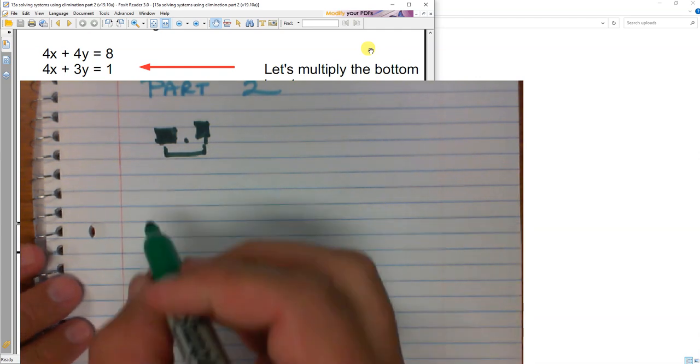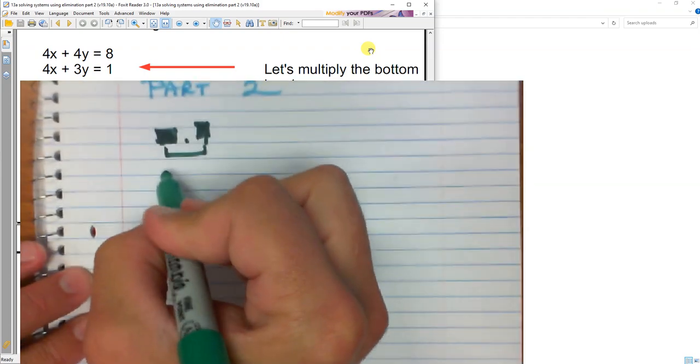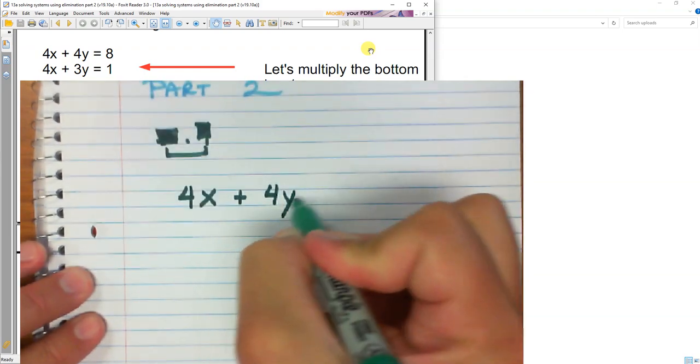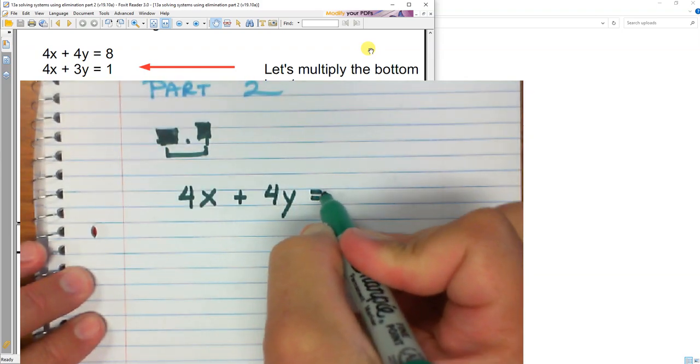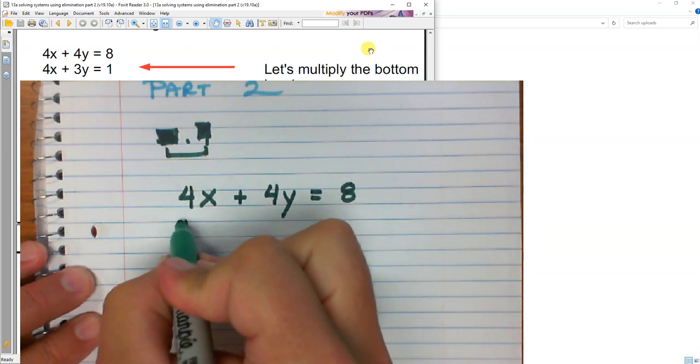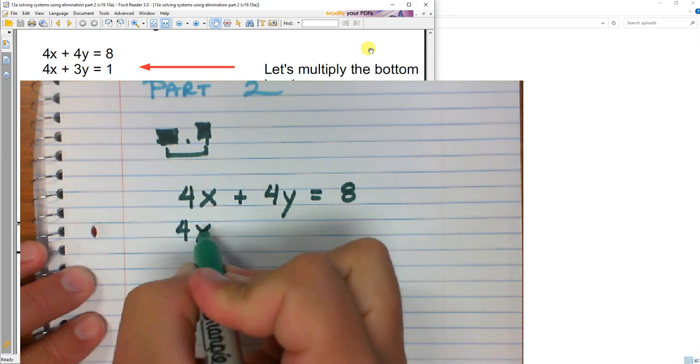Let's try this one more time. I have 4x plus 4y equals 8, and I have 4x plus 3y equals 1.